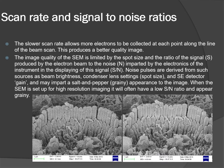Scan rate and signal-to-noise ratio: a slower scan rate allows more electrons to be collected at each point, producing a better quality image. Image quality is limited by the spot size and the ratio of signal produced by the electron beam to noise from the instrument electronics, which can impart a salt-and-pepper graininess. Noise sources include beam brightness, condenser lens, and secondary detector gain. The faster the scan speed, the more grainy the image; the slower the scan speed, the smoother and less grainy the image.